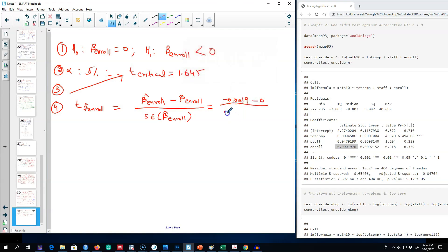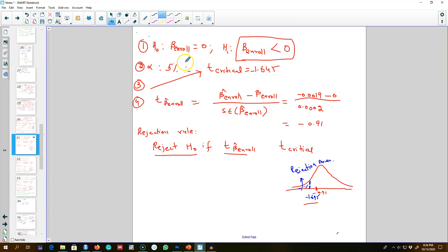This will give us a t value of minus 0.91. Because we are testing our null hypothesis that this value is 0 against our alternative which is on the left-hand side, our rejection rule is slightly different this time.